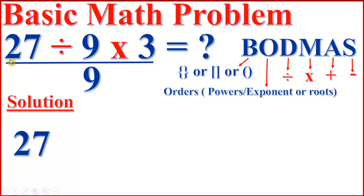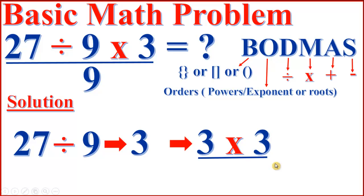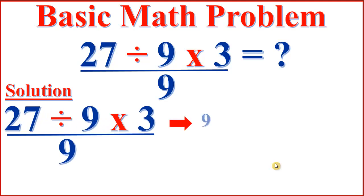To solve this basic maths problem, first we have to divide 27 by 9, because we solve from left to right. 27 divided by 9 equals 3. Then 3 times 3 equals 9.